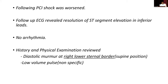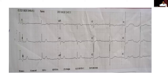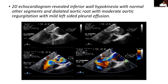It is possible to have persistent hypotension even after rescue or primary PCI in inferior STEMI. We reviewed the history and examination: the patient had central chest pain, and on examination there was a diastolic murmur at the right lower sternal border and low-volume pulse. A bedside 2D echocardiogram showed inferior hypokinesia, dilated aortic root, moderate aortic regurgitation, and mild left-sided pleural effusion. The diagnosis became obvious.